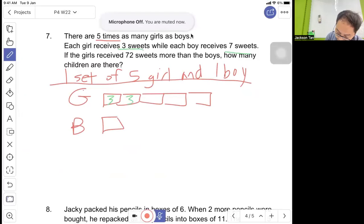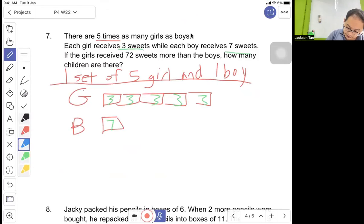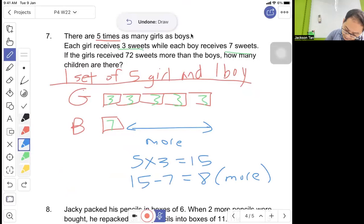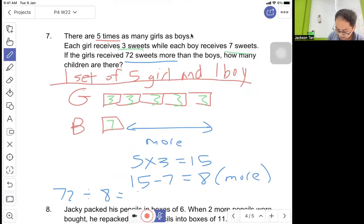Comparing how many more, five times three equals 15, 15 minus seven equals eight, so eight more. Now we know there are nine sets. How many children are there? There are six children per set, so nine sets gives 54 children.